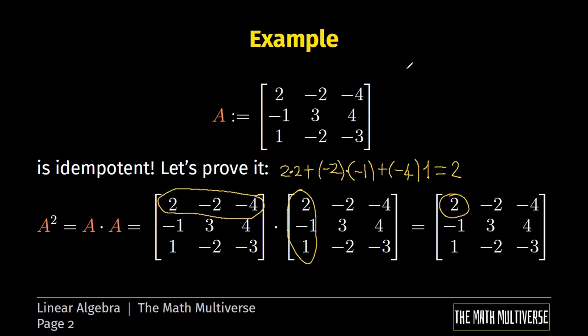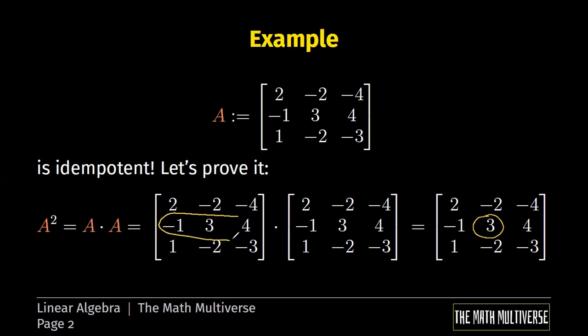Then we can, for example, compute this element, the element 3 here. This is obtained taking the second row of the first matrix and the second column of the second matrix. Then we perform the following operations.